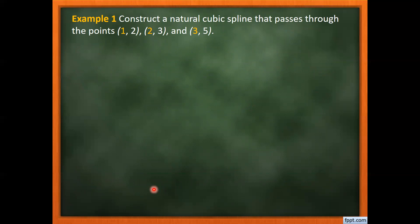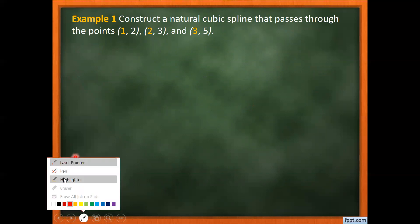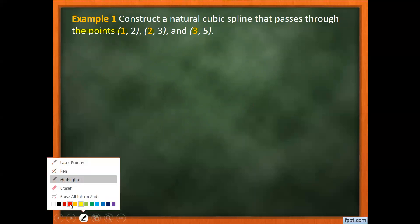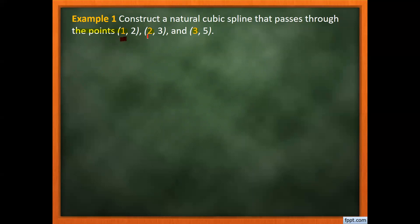Let's start with an example. We will construct a natural cubic spline passing through the points (1, 2), (2, 3), and (3, 5). We want to construct spline polynomials joining these points. The first interval is from 1 to 2 and the second is from 2 to 3, so we require two splines: S0(x) and S1(x).